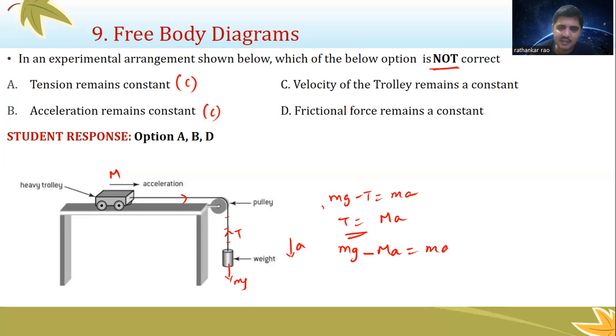So mg, I'll take this equation, substitute here for T minus ma equals ma, or mg should equal m plus capital M into a, or I can say a equals m divided by m plus M into g.